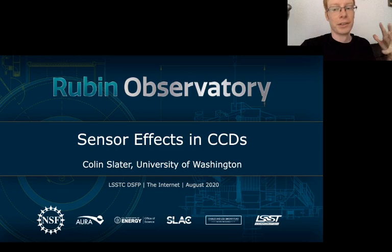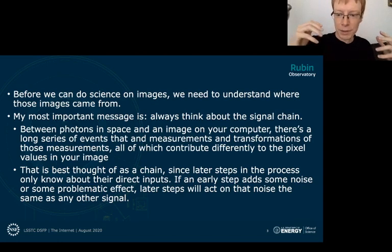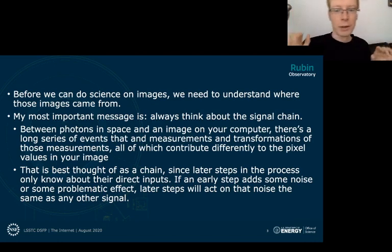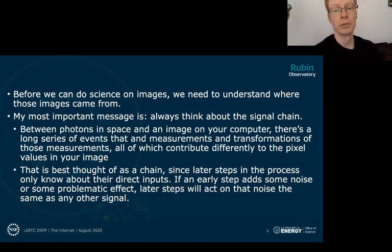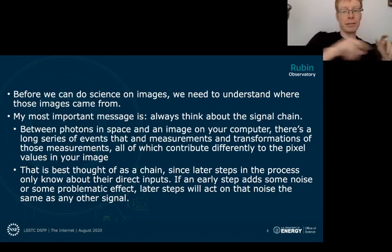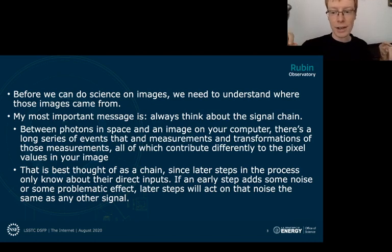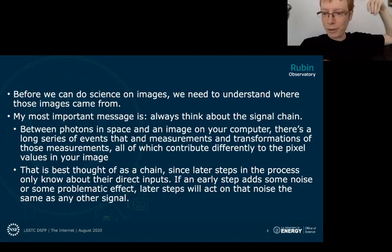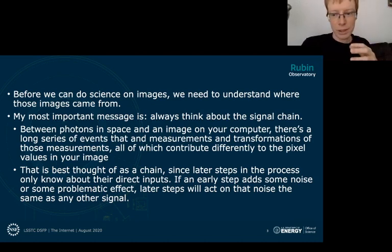I think this is a great way to start off a session on image processing because it's really important that before we try to process images, make measurements on them, or do science with them, we really need to understand where the images came from and how they got to us. I want to encourage people to think about this whole chain of events — photons coming from the star or galaxy, through the atmosphere, through the telescope, through the CCD, and into data on your computer.